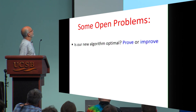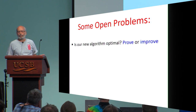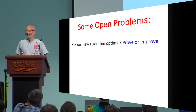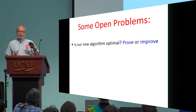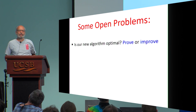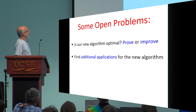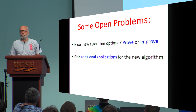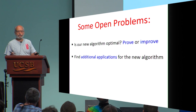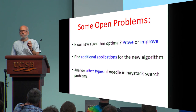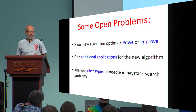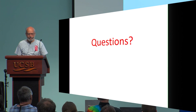To conclude, here are some open problems. Is our new algorithm optimal — prove, disprove, or improve? My gut feeling is that for the memoryless algorithm I don't see how you could do any better, but I'm not sure our use of memory is optimal, and those crazy graphs could keep improving. Find additional applications for the new algorithm — we applied it to find best differential probabilities of S-boxes, deviations from randomness in stream ciphers, and so on. Also analyze other types of needle-in-haystack problems; I only analyzed the case where the needle has higher than usual probability, and lower-probability needles or other definitions remain open.